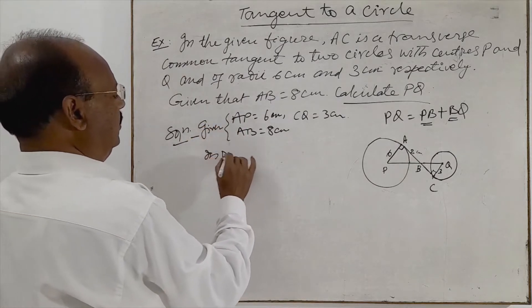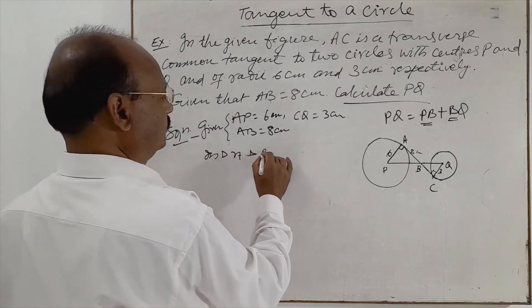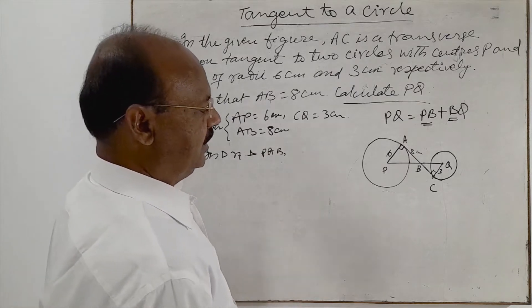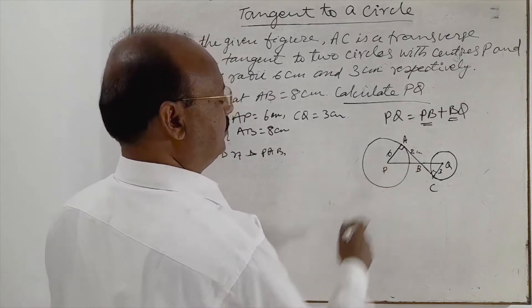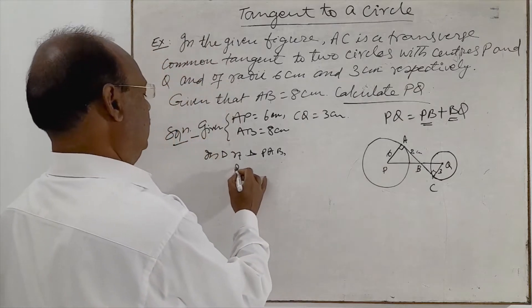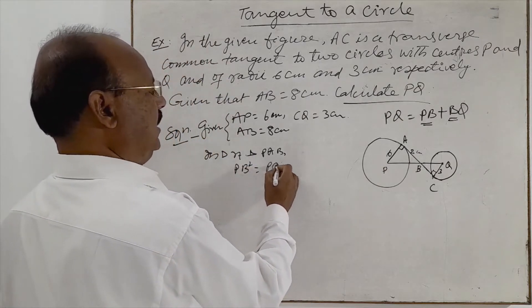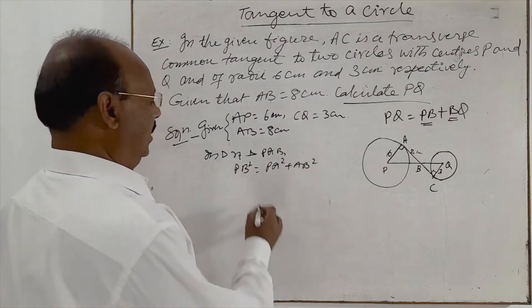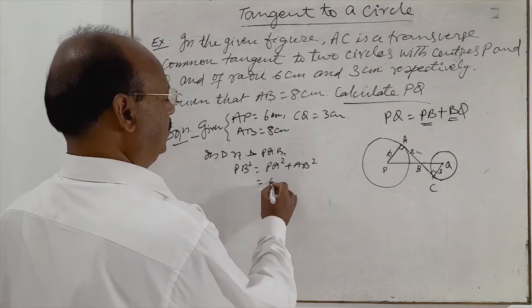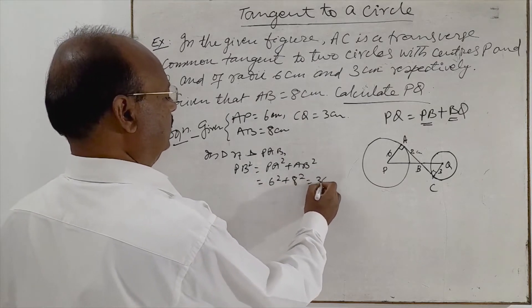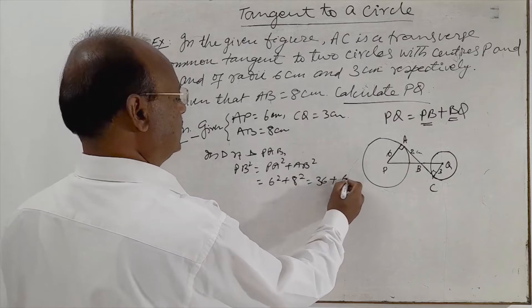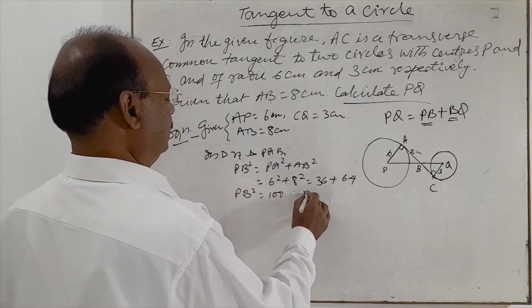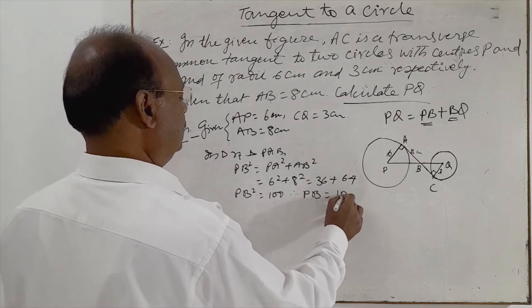And in right triangle PAB, here PB is hypotenuse. Therefore PB square will be PA square plus AB square by Pythagoras theorem. And this is equal to 6 square plus 8 square, that is 36 plus 64. So PB square is equal to 100 and therefore PB is equal to 10 cm.